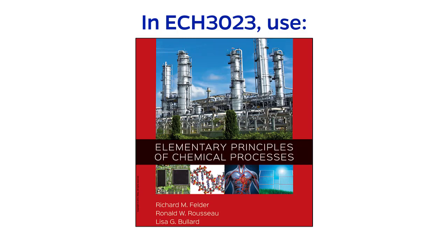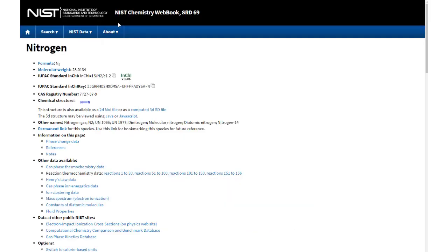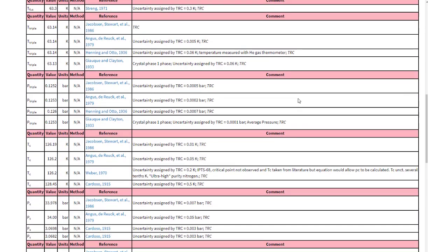For my class, anytime you need to look something up, it will be in one of three places: the Felder, Rousseau, and Bullard textbook, Perry's Chemical Engineering Handbook, or NIST.gov. We'll talk about this later on in the course.